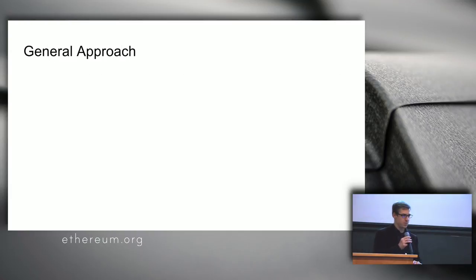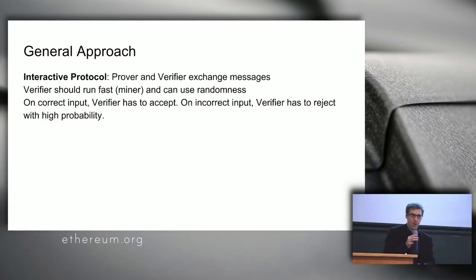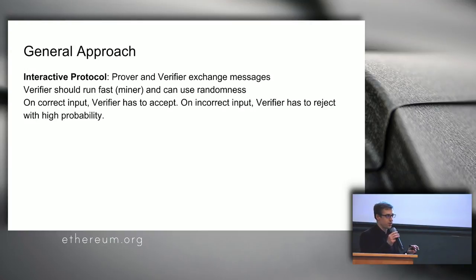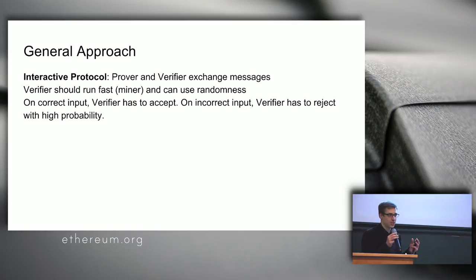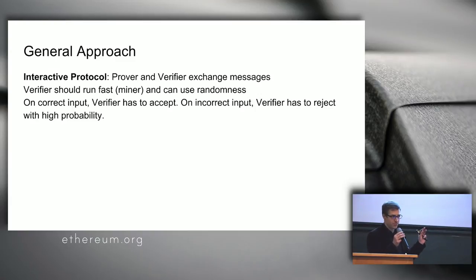Now, how do these computation verifiers work? Almost always they start with something called an interactive protocol. In an interactive protocol you always have two parties. One of them is called the prover and the other is called the verifier. The prover is usually much more powerful than the verifier — think of the prover as someone who creates a transaction and the verifier as just a smart contract on the blockchain. The prover has tremendous memory, disk space, and network access, while the verifier is extremely limited. They exchange messages back and forth.